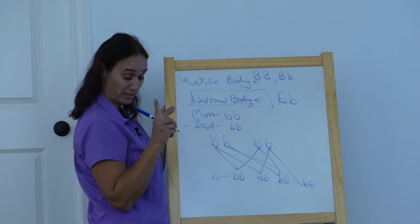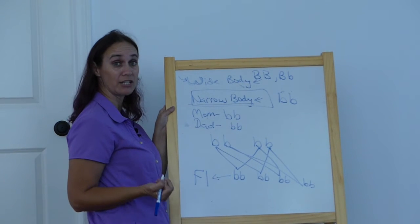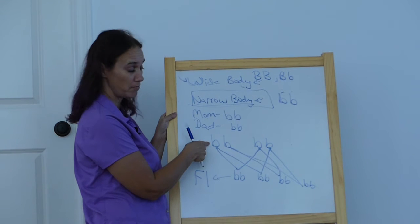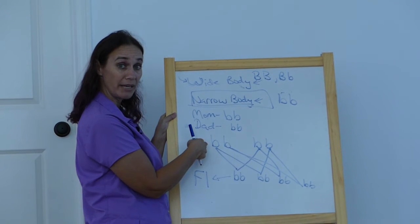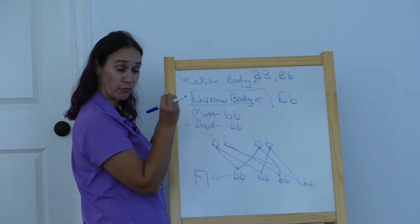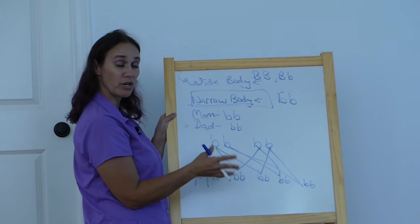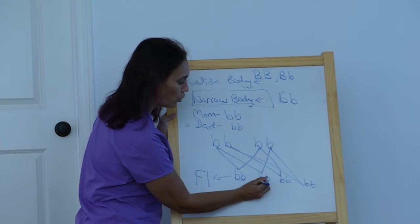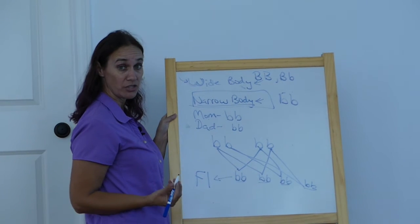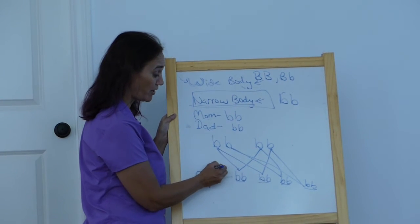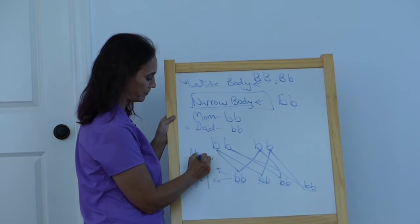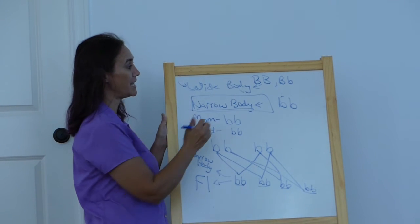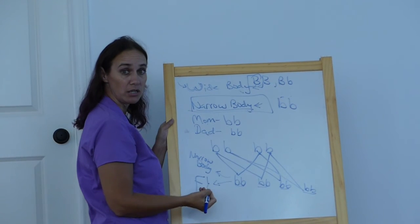This is that important F1 generation that I talked about in the Mendel video. If we take narrow body mom and narrow body dad, they both have bb as their genotype. We breed them together and split up these alleles so every offspring gets half from mom, half from dad. What combinations will we get? We see that every single one is bb genotype, which means narrow body phenotype. All of them narrow body. You will never see a wide body because there is no big B allele to mix in.